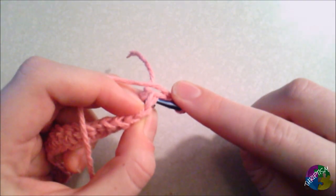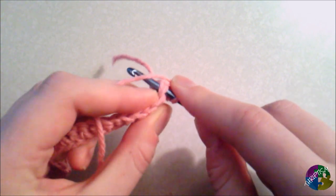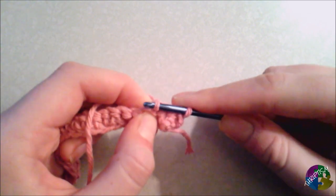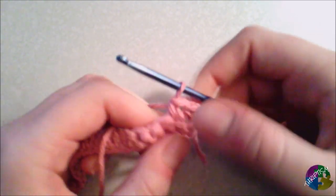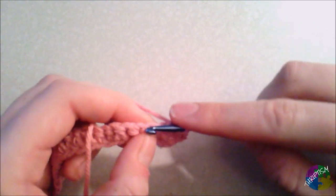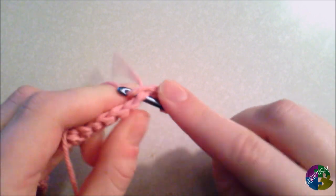Again, we'll go through. You can kind of see these top two. We're going to go under that, yarn over, pull through, yarn over, pull through. That's two. So we'll continue to do this for 30 stitches, or 28 more.